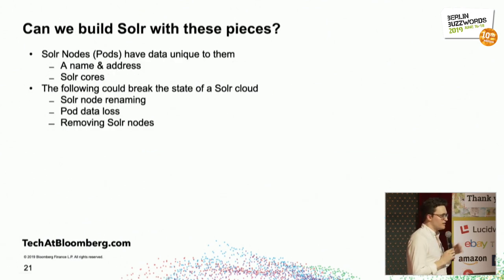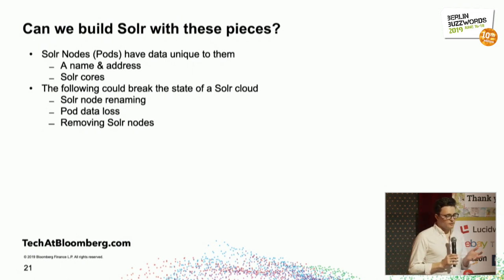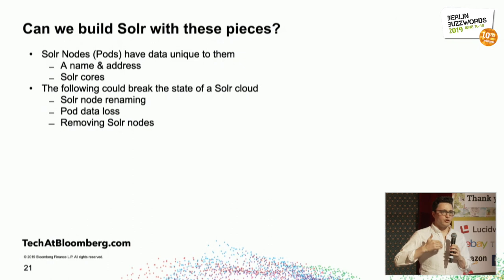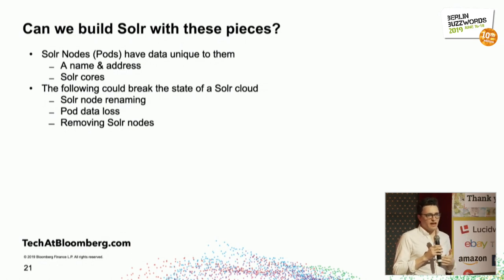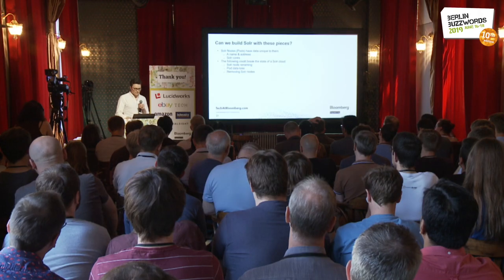The question is: can we build a Solr cloud with these Kubernetes pieces? A few issues come up. Solr nodes, running in Kubernetes pods, have data unique to them — not just the Solr cores they're running, which need persistent storage, but also a unique name and address registered in Zookeeper. Whenever a node restarts, it needs a consistent name and address for other nodes to communicate with it. The name, address, and Solr cores need to be persisted through outages and pod restarts, and having any of them change when the pod restarts could break Solr cloud.